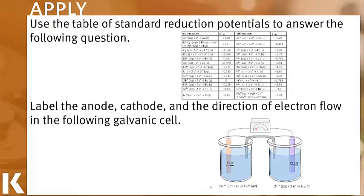I'm going to start with the left part of the cell. When I look at the left side, I see that iron(III) is going to iron(II). So I need to look at my table to find iron, and I see that iron has a reduction potential of positive 0.771.